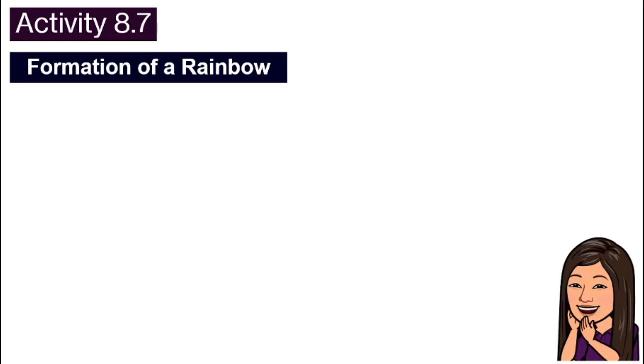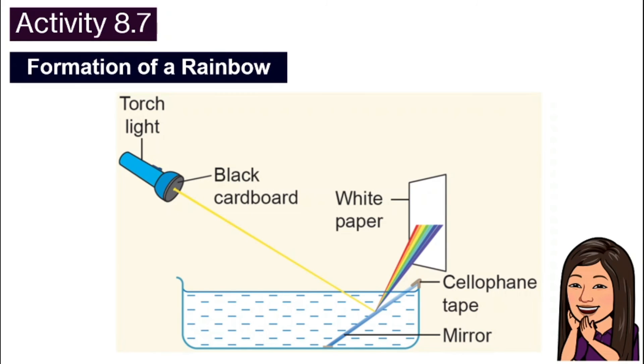Another activity on that page is the formation of rainbow, where we will need a black cardboard, and we need to make a little hole and attach it to our torchlight to be used as our source of light, just like the sunlight. And then we will have a basin, fill it up, maybe halfway with water, and then we will secure a mirror right here using the cellophane tape, tape it down to secure it. And when we direct our light, you can catch the rainbow on a piece of white paper right here. Again, if you need the step-by-step instruction, please refer to your textbook page 238.